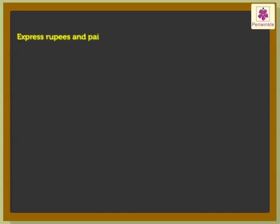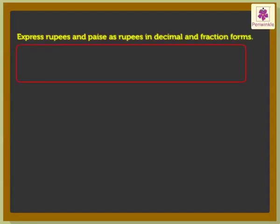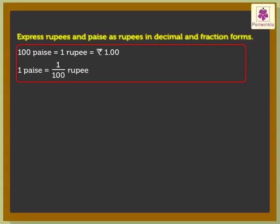Firstly, let's express rupees and paise as rupees in decimal form and in fraction form. We know that 100 paise is equal to 1 rupee, which is expressed as 1.00 rupee as a decimal. Thus, 1 paise is expressed as 1 upon 100 rupee as a fraction, which is equal to 0.01 rupee in decimal form.